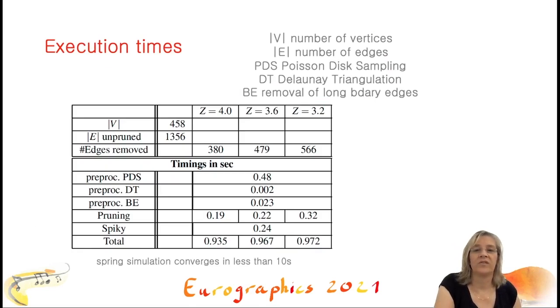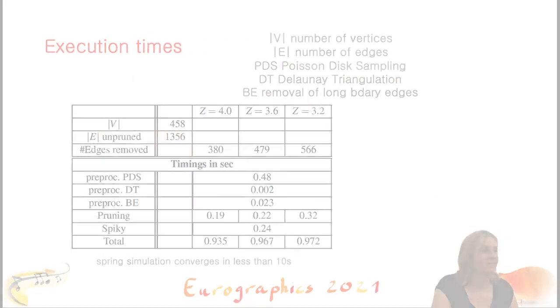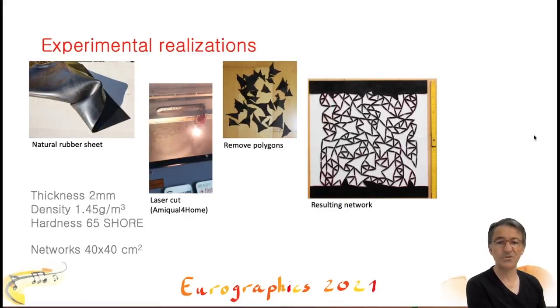The preprocessing generation of the input networks takes half of the time, and in total, it takes less than a second to build auxetic network of 450 points.